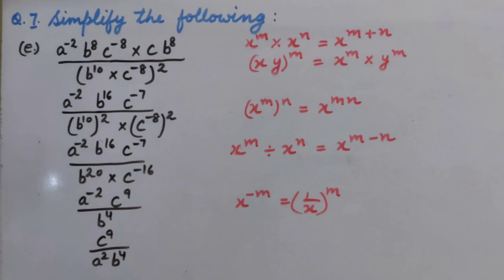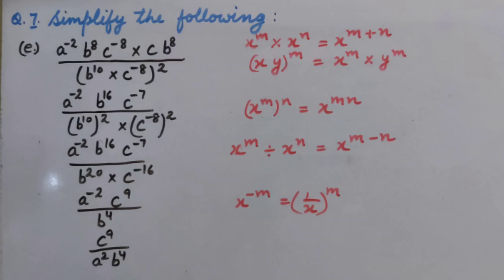So we get A raised to the power minus 2, B raised to the power 16, C raised to the power minus 7 upon B raised to the power 10, whole raised to the power 2.